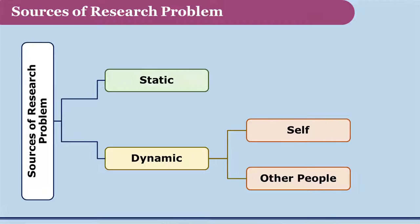For identification of a research problem, one needs to take a lot of efforts. There are various sources from which research problems could be identified. Some sources could be static while some others could be dynamic. The dynamic sources could be further classified as the researcher himself or herself, and other persons.